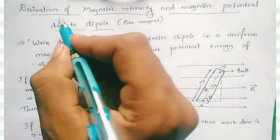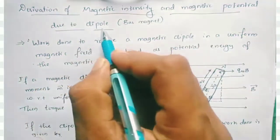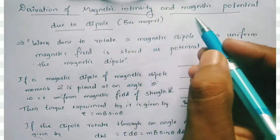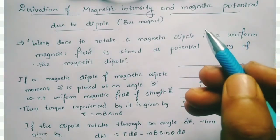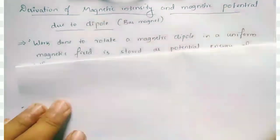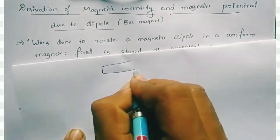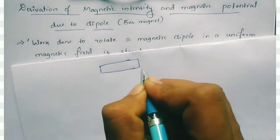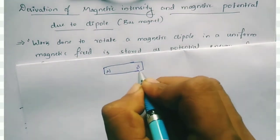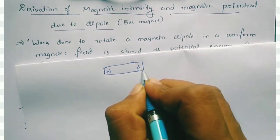The concept: derivation of magnetic intensity and magnetic potential energy due to a dipole. Here we have to derive the magnetic potential energy due to a dipole moment. Consider a magnetic bar having two poles — one is the north pole and one is the south pole.